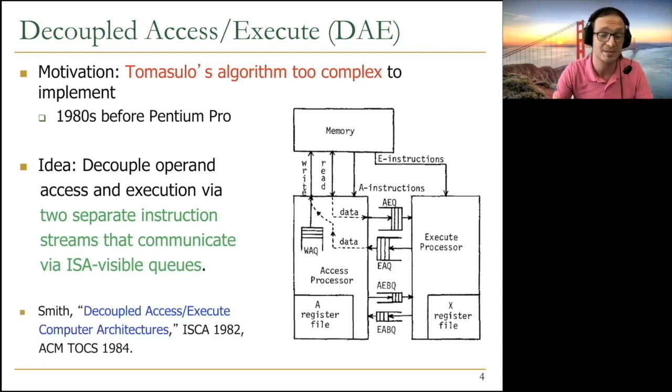And it was introduced by Jim Smith in these seminal papers, in the seminal paper in ISCA 1982. And its basic principles are applied in computing systems today, but not exactly as it was envisioned. First of all, you can see that ISA needs to change over here. So communication happens through these queues. As you can see, these are FIFO queues. They're ISA visible, instructions visible queues.